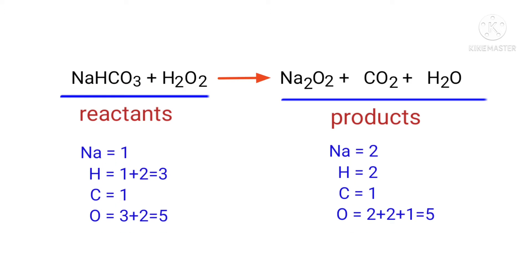If you look at this equation, the equation is not balanced. On the reactants side there are 1 sodium atom, 3 hydrogen atoms, 1 carbon atom, and 5 oxygen atoms. On the products side there are 2 sodium atoms, 2 hydrogen atoms, 1 carbon atom, and 5 oxygen atoms. The number of atoms are not balanced on both sides.